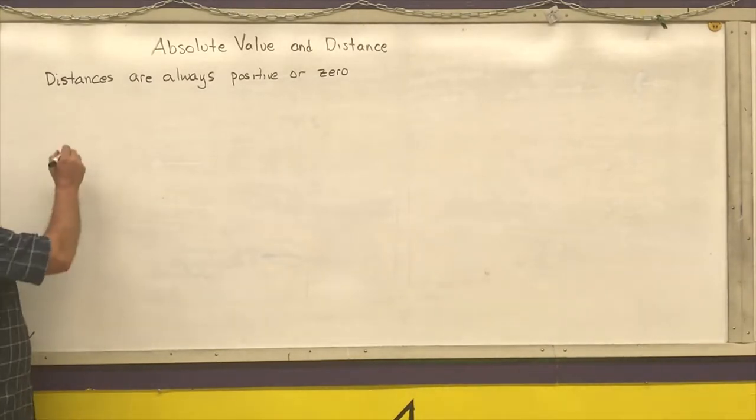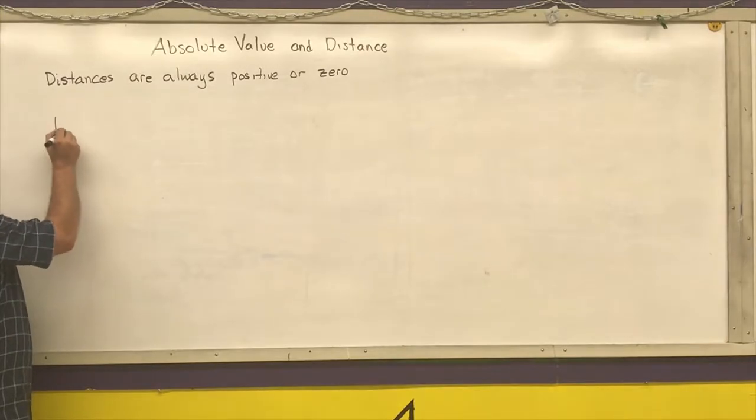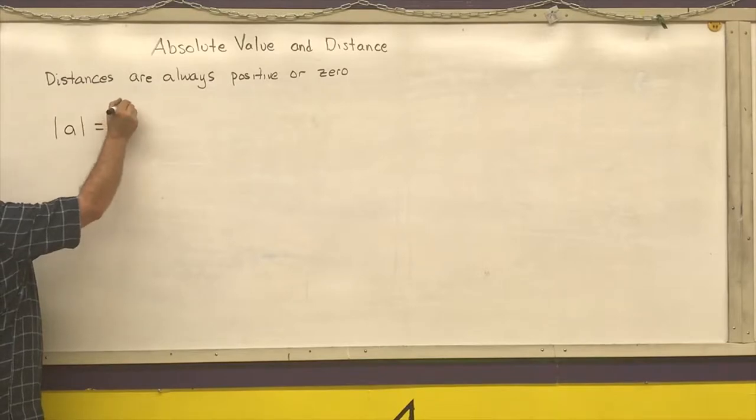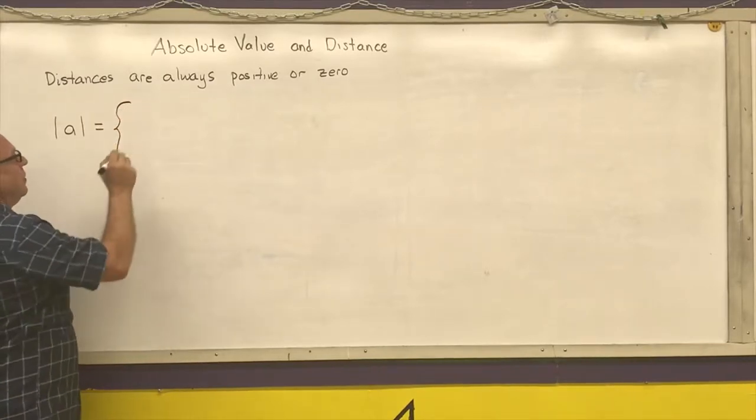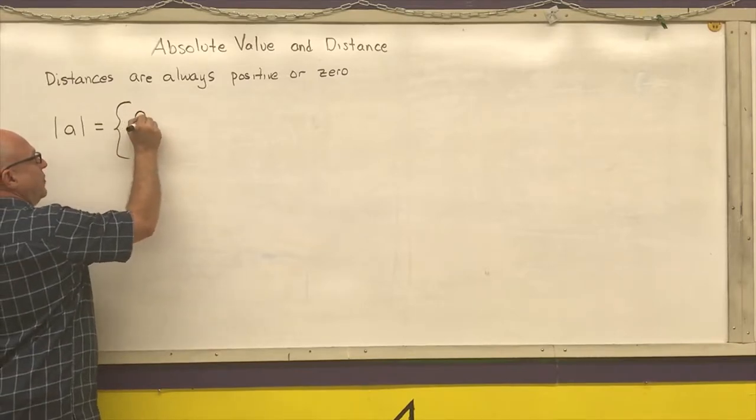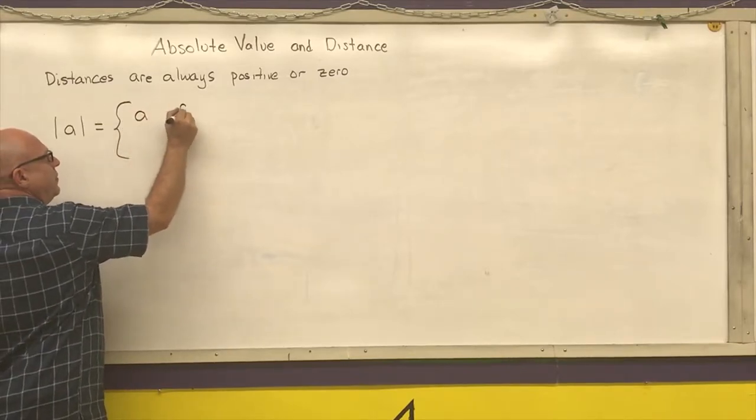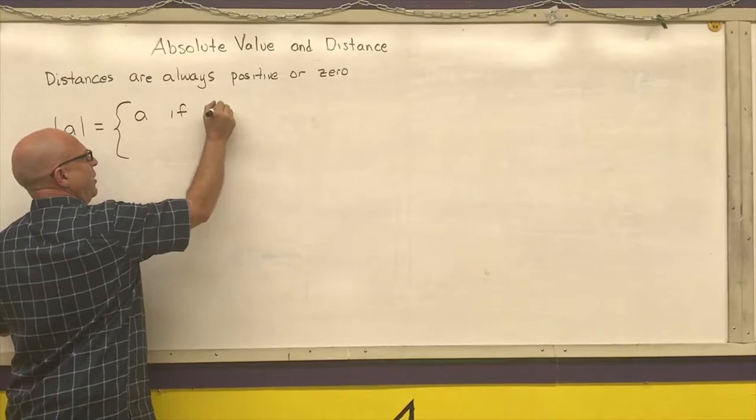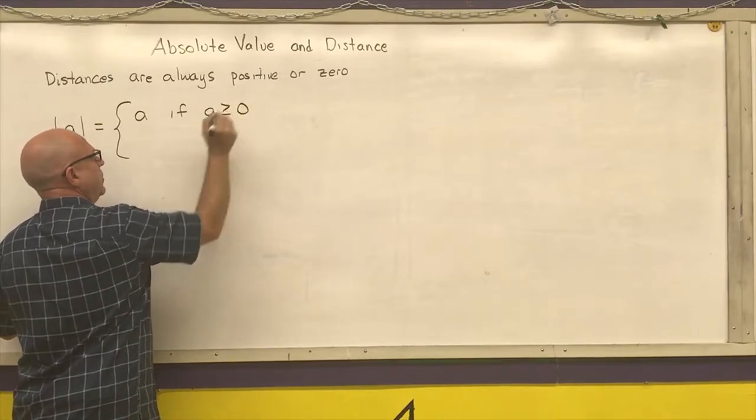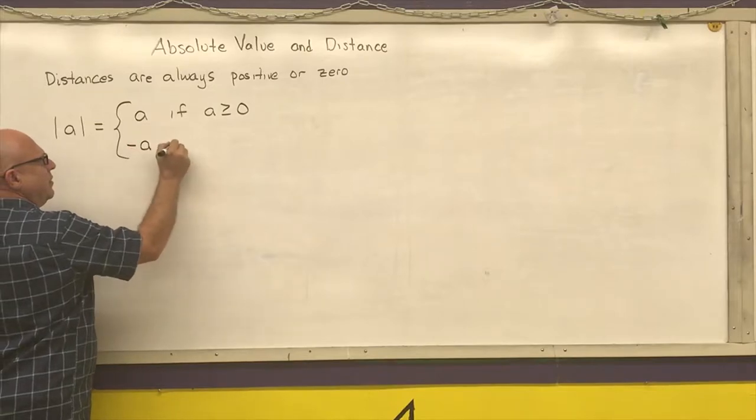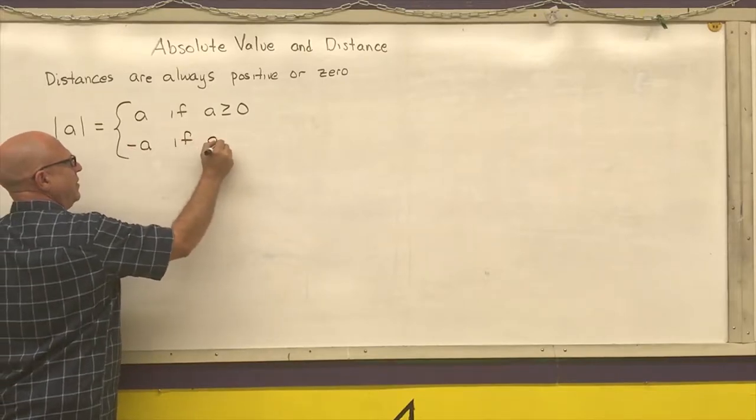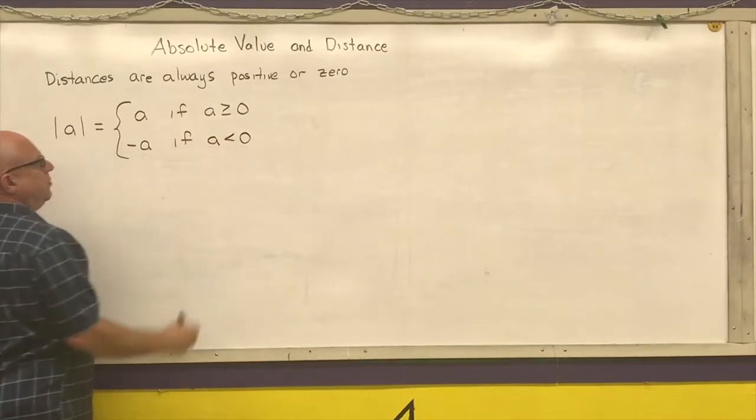Let's talk about absolute value. The absolute value of a number A is equal to two different cases. It's equal to itself if A is greater than or equal to zero, and it is its opposite if A is less than zero.